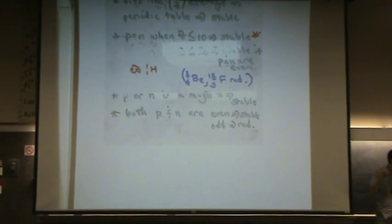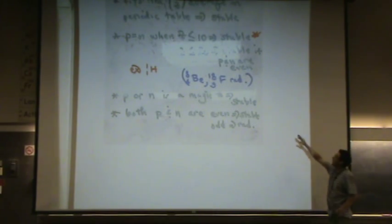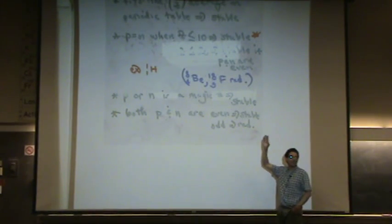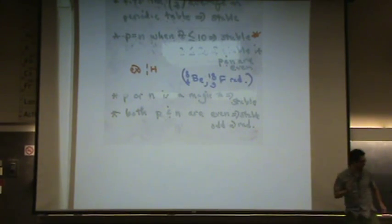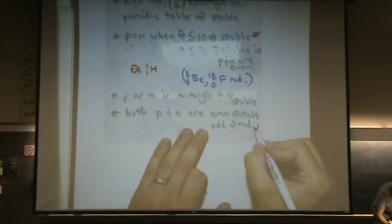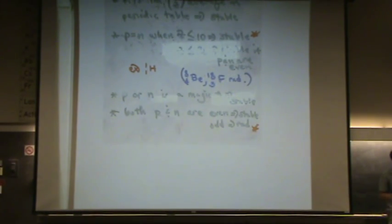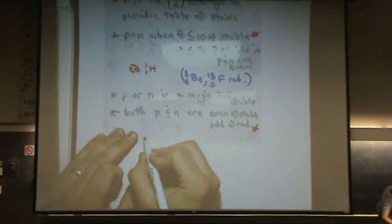So, I can't really put a star by the top one. If they're both even, it's usually stable, but not always. But the second one, if they're both odd, I'm going to put a star by that one. You can almost always take the second one to the bank. If they're both odd, it's almost always unstable. There are, of course, several exceptions.